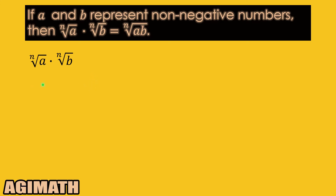We have the nth root of a times the nth root of b. What we can do is apply the definition of a radical expression. Recall that when you have the radical expression, the nth root of a, we can transform that into a raised to the power of 1 over n, where the index becomes the denominator of the rational exponent. Similarly, the nth root of b transforms into b raised to the power of 1 over n.